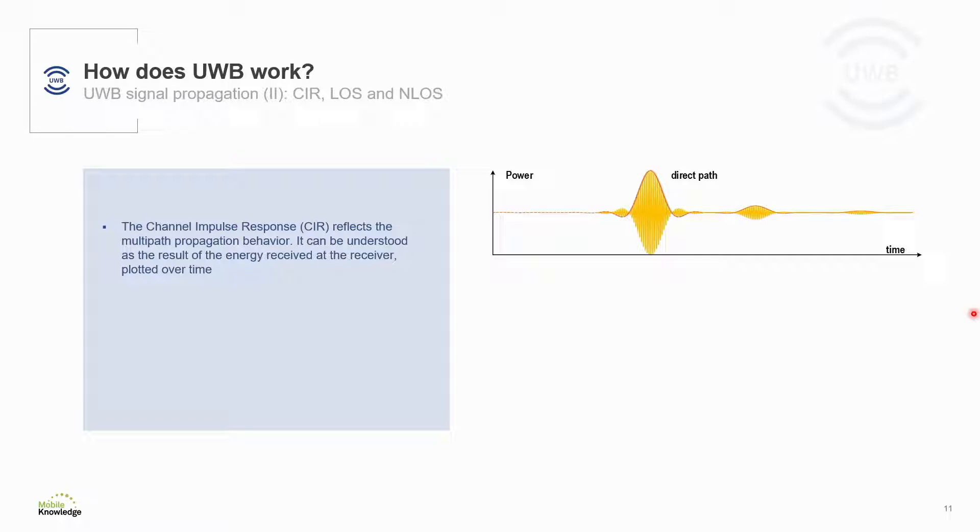The channel impulse response shows the energy received over time and reflects the reception of the same signal in different time intervals caused by the multipath propagation behavior of the signal. If the first pulse received has the higher energy level, this means that the direct path is the strongest path, so that we are in line of sight with the target object, without any obstacle in between.